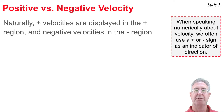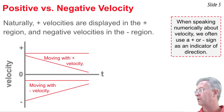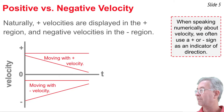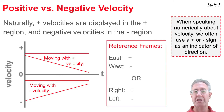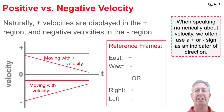Positive velocities are displayed in the positive regions of the graph, and negative velocities in the negative regions. Here you see four lines: two are up in the positive region for objects moving with positive velocity, and two are in the negative region for objects moving with negative velocity. Positive and negative simply represent direction, so we need a reference frame — for example, east is positive and west is negative, or upward is positive and downward is negative. When speaking numerically about velocity, we use a plus or minus sign as an indicator of direction.